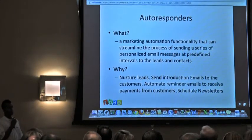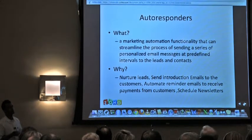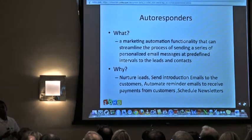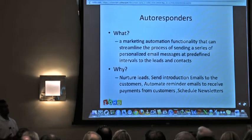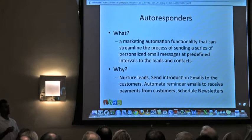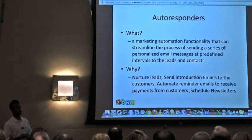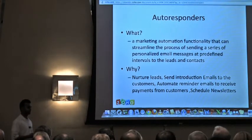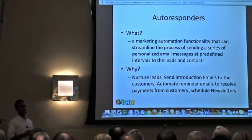In autoresponders, can I assign different leads or contacts to different marketing programs — different tracks? So if they click a link in the first email, they move to a different nurturing program? No — in autoresponders you can just trigger emails to a list of contacts or leads, it's a simple email. The ability to track clicks, opens, and automatically move contacts to different tracks based on their response — all those things are coming as features in the new Zoho Campaigns service.